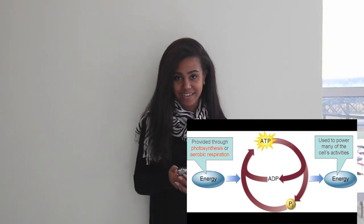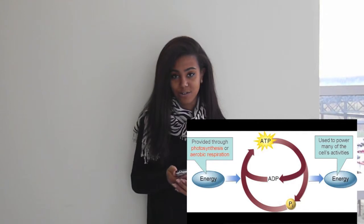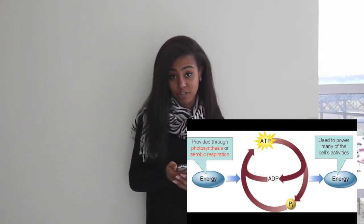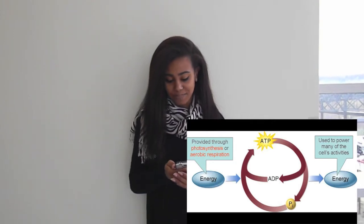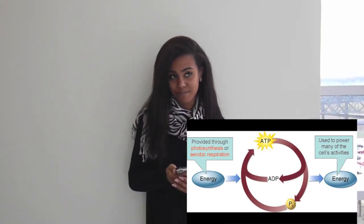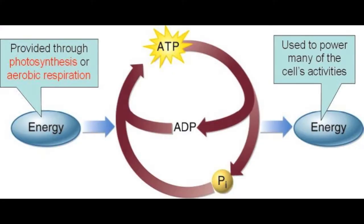ATP is key in metabolism because we need the energy provided from photosynthesis or aerobic respiration to combine with ADP, and then give us more energy to supply our cells with energy to do their daily functions. Here's a closer look at the diagram that Christina just explained.